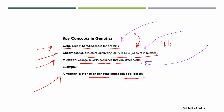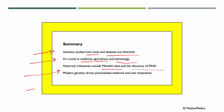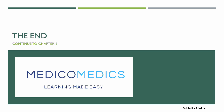In summary, genetics studies how traits and diseases are inherited. It's crucial in medicine, agriculture, and technology. Historical milestones include Mendel's laws and the discovery of DNA. Modern genetics drives personalized medicine and new treatments. That's the end of the first chapter.